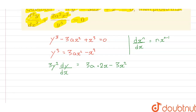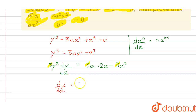Now all the 3s cancel each other — the 3, 3, and 3 here as well. Which means dy/dx is equal to (2ax minus x²) divided by y².